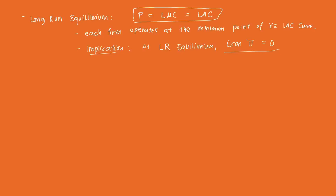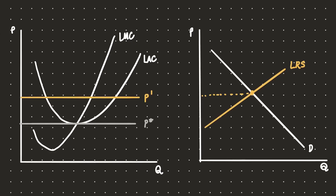Let's get this concept better by doing a graph. On the left-hand side we have the firm's individual graph to derive the supply function of the firm. That's the portion of the long-run marginal cost curve above the minimum of the long-run average cost curve, which in this case is just AC. All points above that constitute the firm's long-run supply curve. On the right-hand side we have the market.